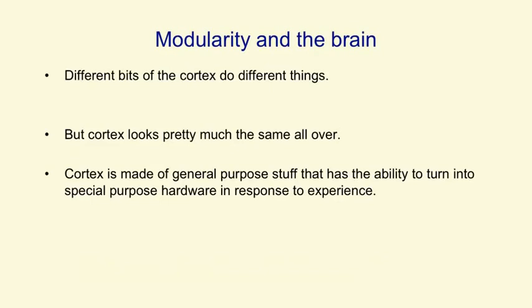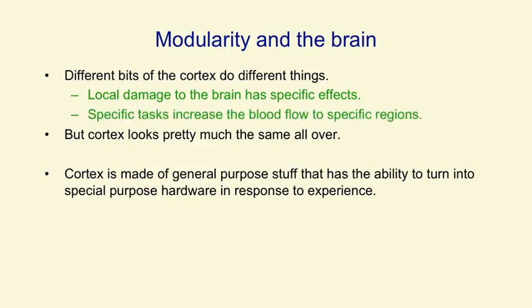One final point about the brain is that the cortex is modular, or at least it learns to be modular. Different bits of the cortex end up doing different things. Genetically, the inputs from the senses go to different bits of the cortex, and that determines a lot about what they end up doing. If you damage the brain of an adult, local damage causes specific effects — damage to one place might cause you to lose your ability to understand language, and damage to another might cause you to lose your ability to recognise objects. We know a lot about how functions are located in the brain because when you use a part of the brain, it requires energy and demands more blood flow, which you can see in a brain scanner.